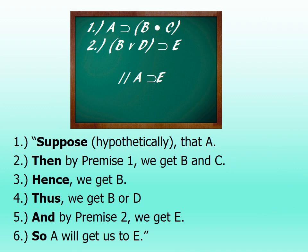We'd have taken the argument listed on the blackboard and said: suppose, hypothetically, that we had had an A. Then according to premise one, we'd get B dot C. And from B dot C, we get B by simplification. And if B is true, then B or D is true. And line two would take us by modus ponens to E. So A does get us to E after all.